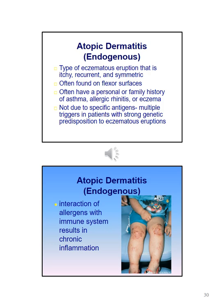Atopic dermatitis is a type of eczematous eruption that is itchy, recurrent, and symmetric, often found on the flexor surfaces. Patients often have a personal or family history of asthma, allergic rhinitis, or eczema. It's not due to a specific antigen; usually there are multiple triggers in patients with a strong genetic predisposition. Interaction of allergens with the immune system results in chronic inflammation.